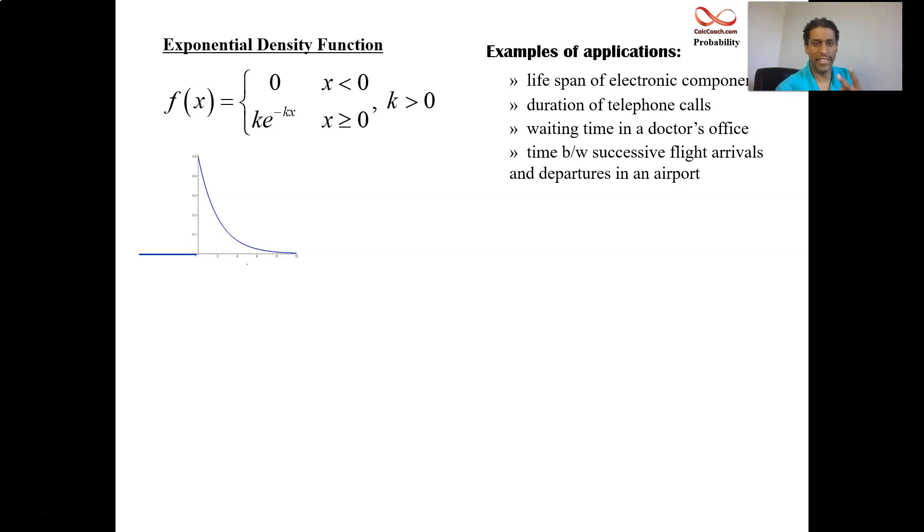And remember the two properties of a probability density function: number one, it must be greater than or equal to zero. This function is equal to zero, then it's greater than zero. And also at the same time, the total area under the graph must be one. Now originally it starts off as minus infinity to infinity, but this function is zero up to zero. So we can just change the integral to be from zero to infinity because there's no need to integrate the function zero. There's no area there. All the area is coming when x is greater than zero.